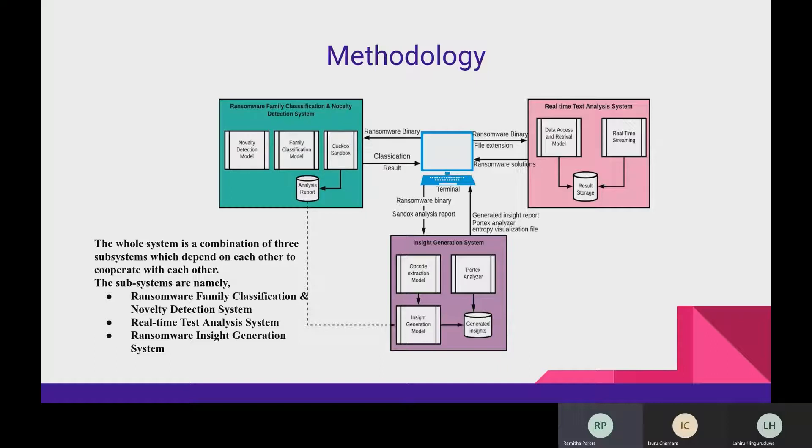Since this system is gathering information continuously, malware analysts can obtain fresh information every time. The third subsystem is Ransomware Insight Generation System, which aims to ease the work of a malware analyst by automating part of their task.